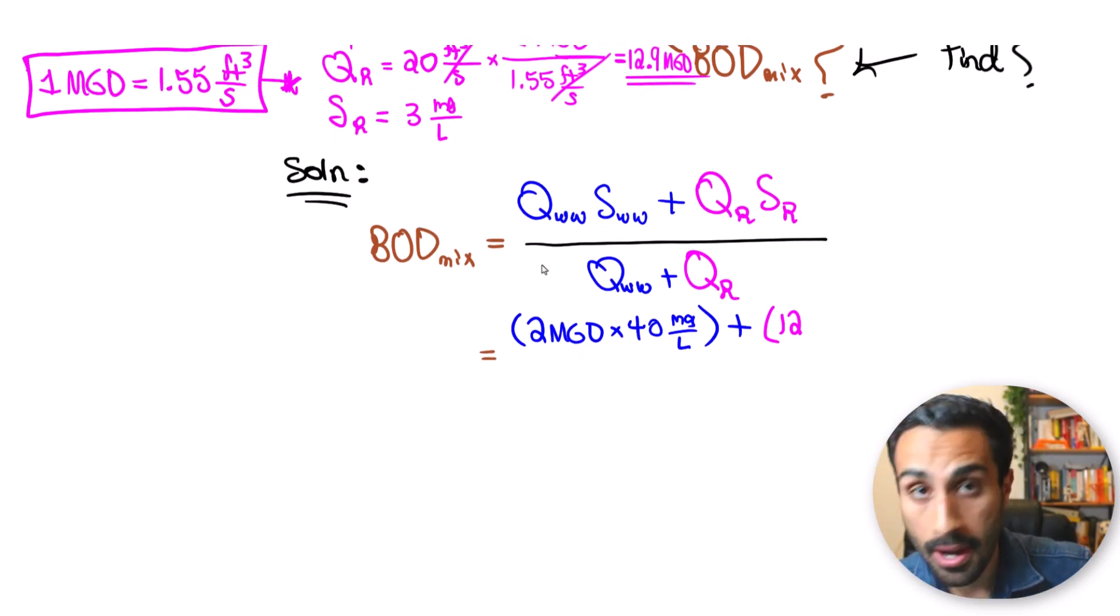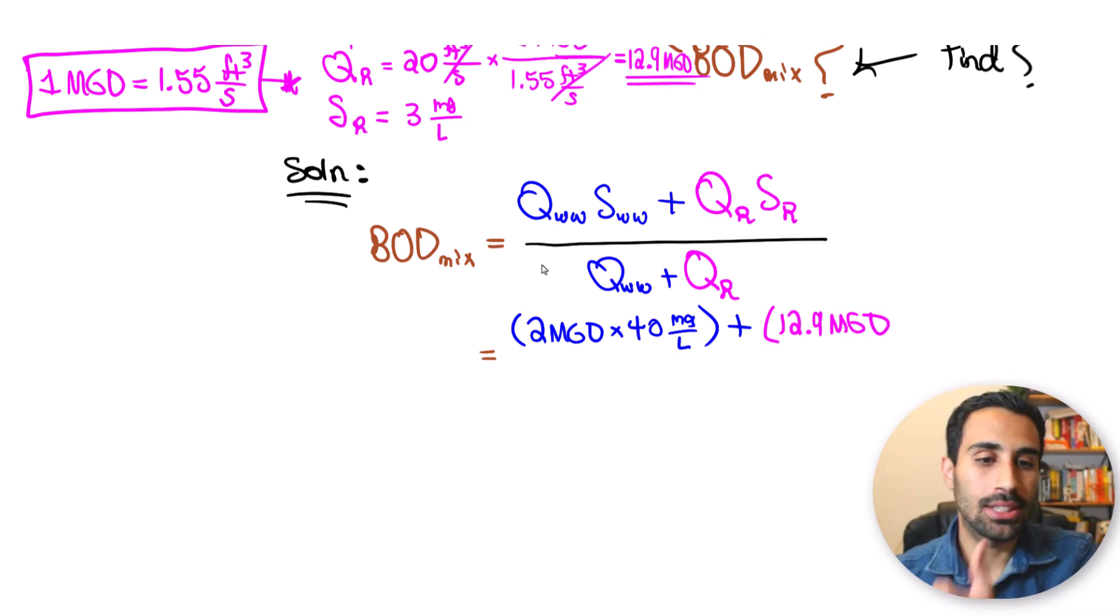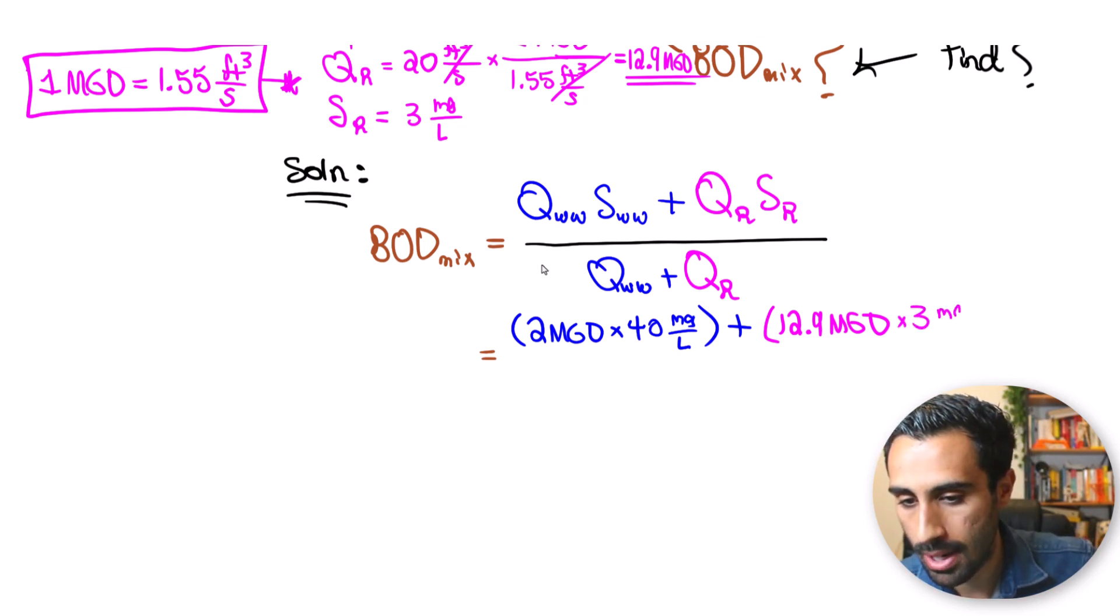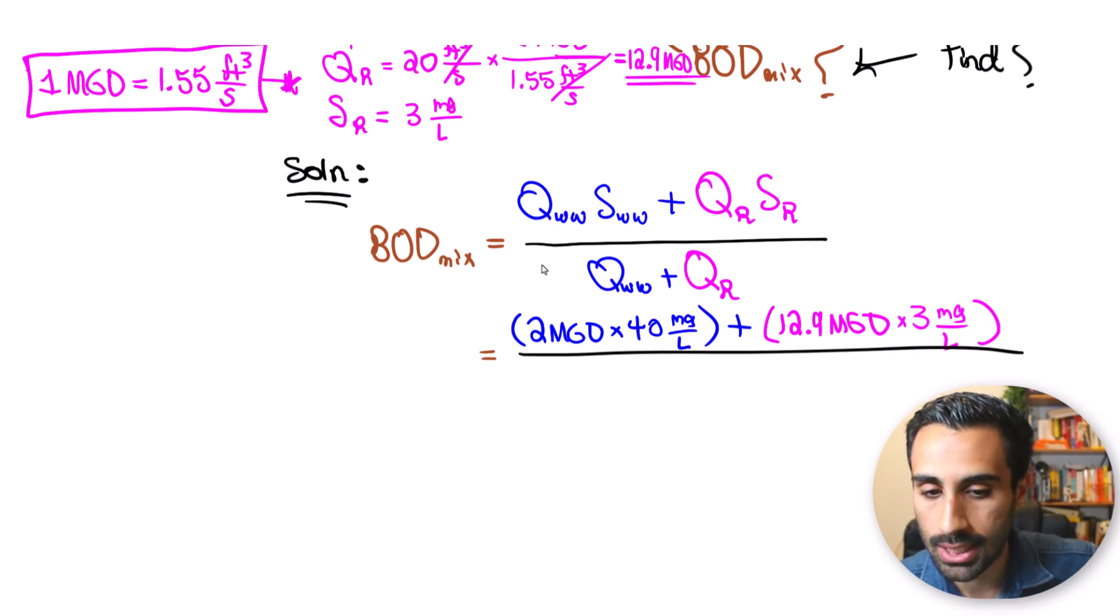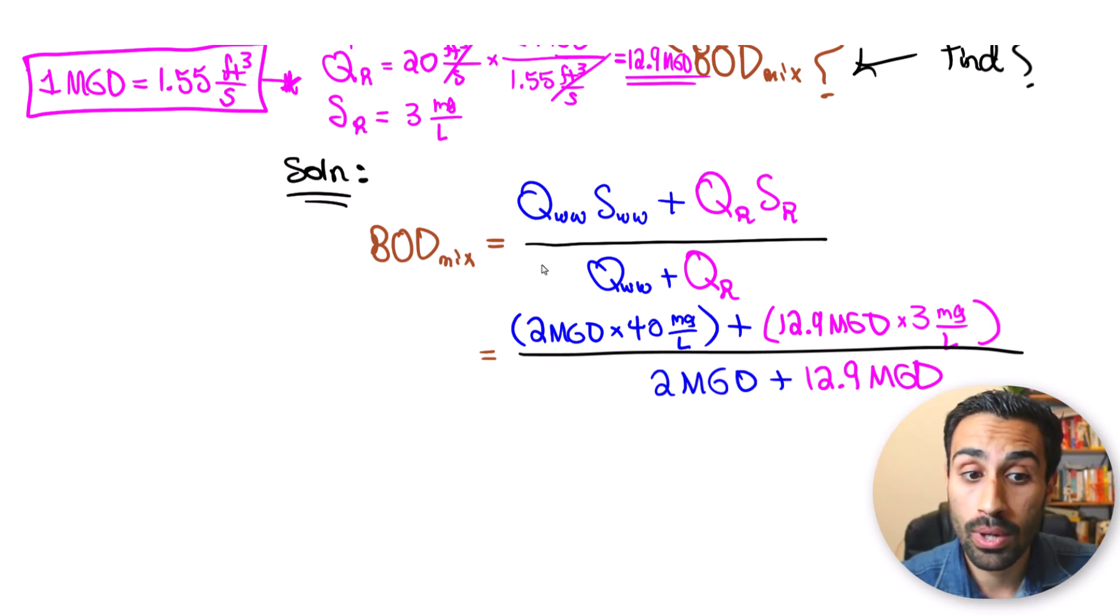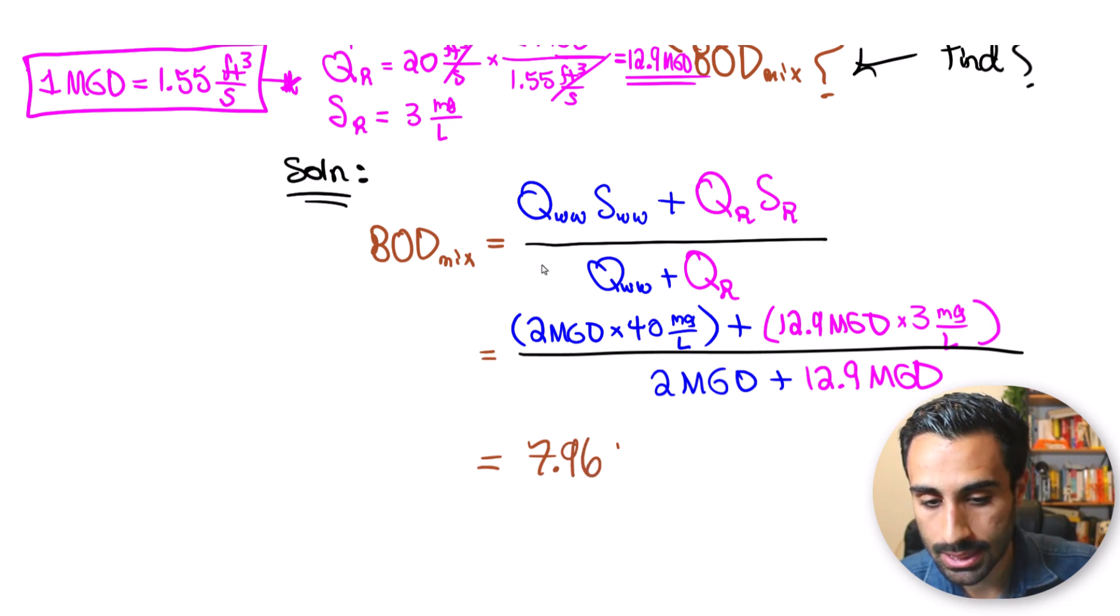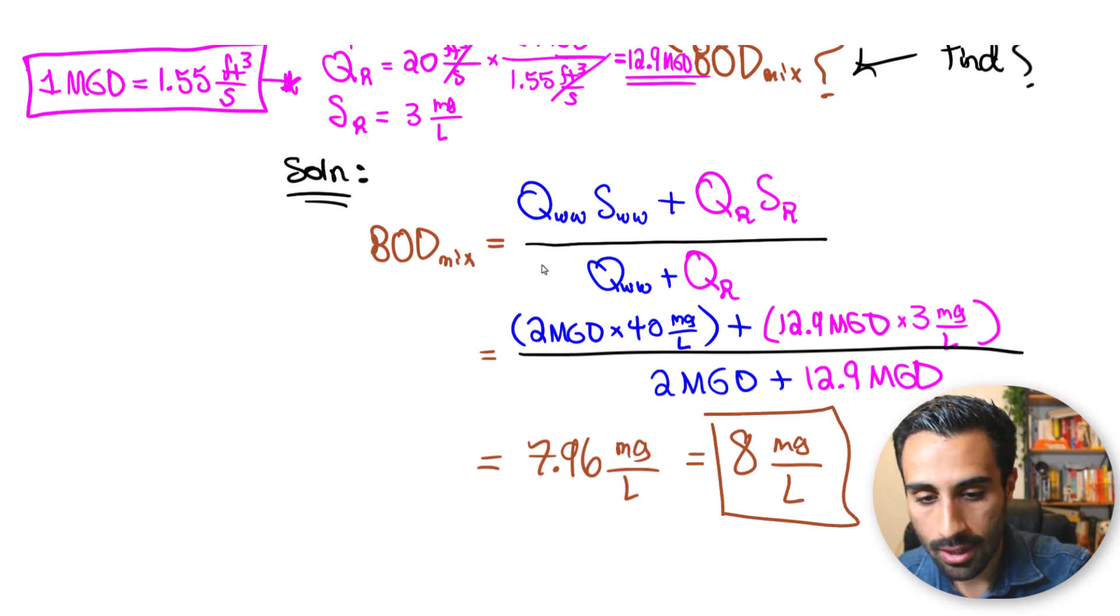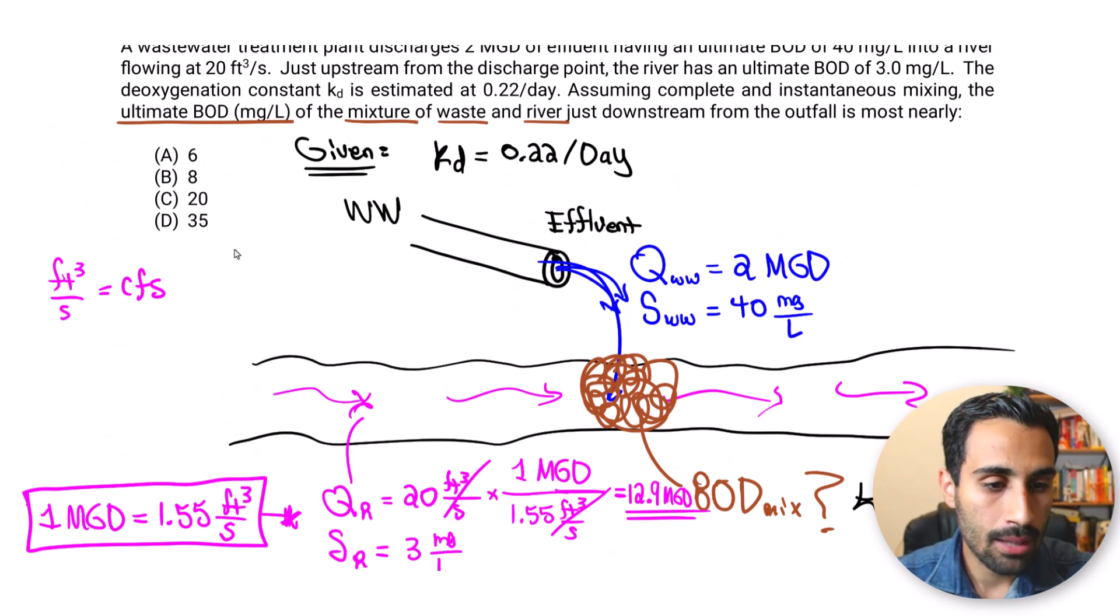So we put that in here as 12.9 MGD, then we take this times S river, that's already in milligram per liter, it looks good, so three milligram per liter. Take all of this and then divide by the stuff on the bottom, the summation of the flow, 2 MGD plus the 12.9 MGD, and notice now what we will get is the BOD for the mix. Doing that we get 7.96 milligram per liter when we do the math, and we're gonna say most nearly, round this up, we're gonna get 8 milligram per liter, and that right there is our answer. So we go up top and pick B for this one.